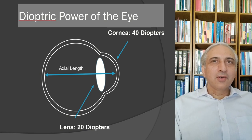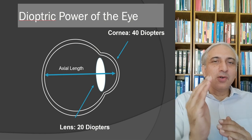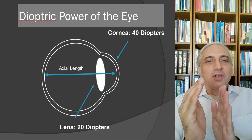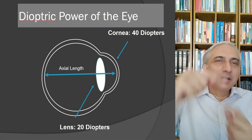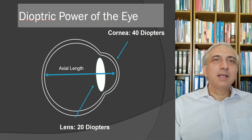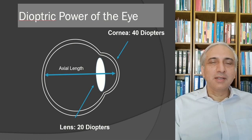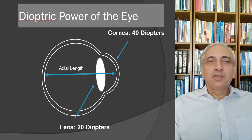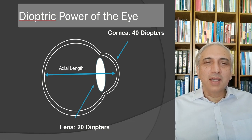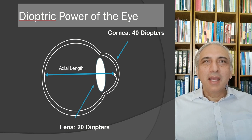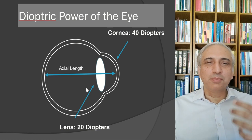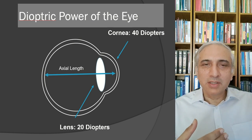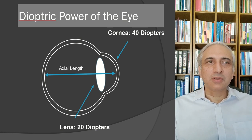The cornea has 40 diopters of power due to the air-liquid interface, and the lens provides an additional 20 diopters. To implant the correct IOL, we need to measure the axial length and corneal dioptric power pre-operatively — this procedure is called biometry. Cataract surgery is now essentially refractive surgery; an IOL is prescribed to obtain a specific refractive effect and reduce spectacle dependency.